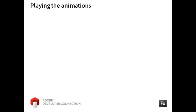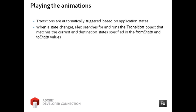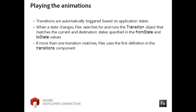Once you have your transitions defined, the only thing left to do is to play it. You do not need to apply any special events or triggers to play a transition because transitions are automatically played when the application switches between the states defined in a transition's from state and to state properties. When a state changes, Flex searches for and runs the transition instance that matches those two values. If more than one transition matches, Flex uses the first match it finds.